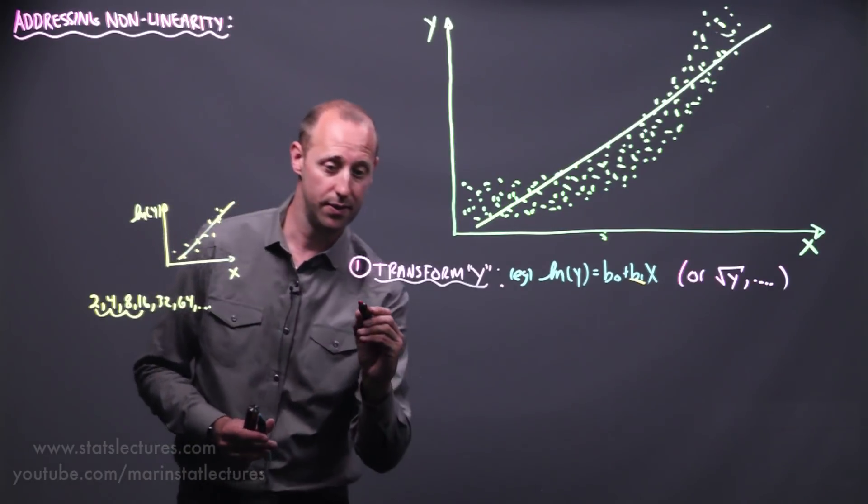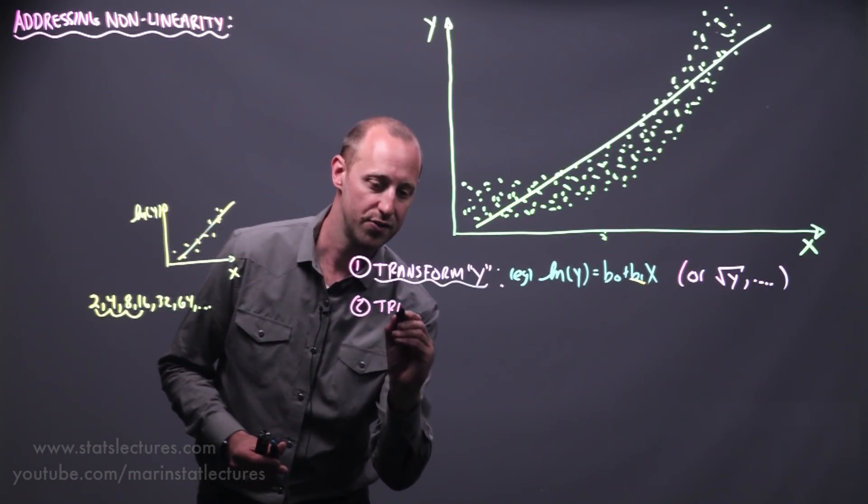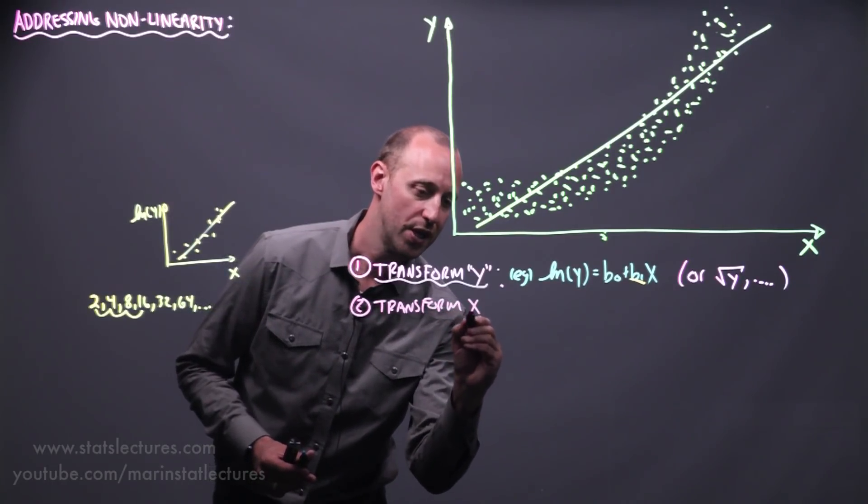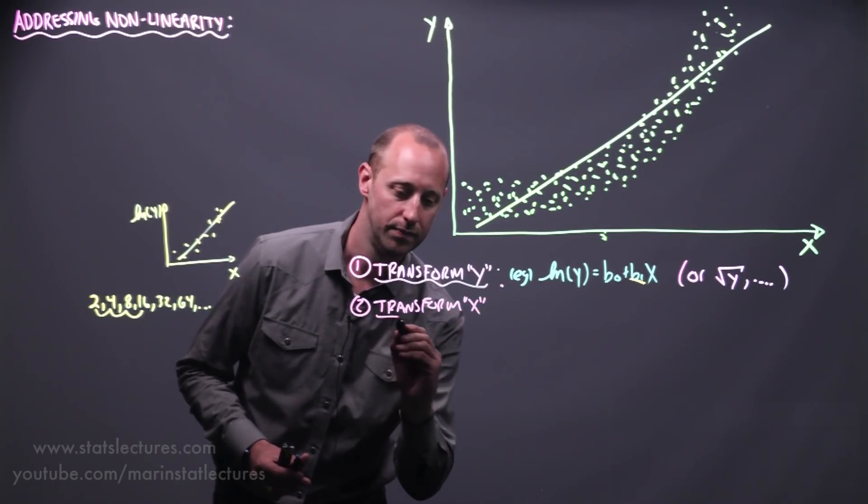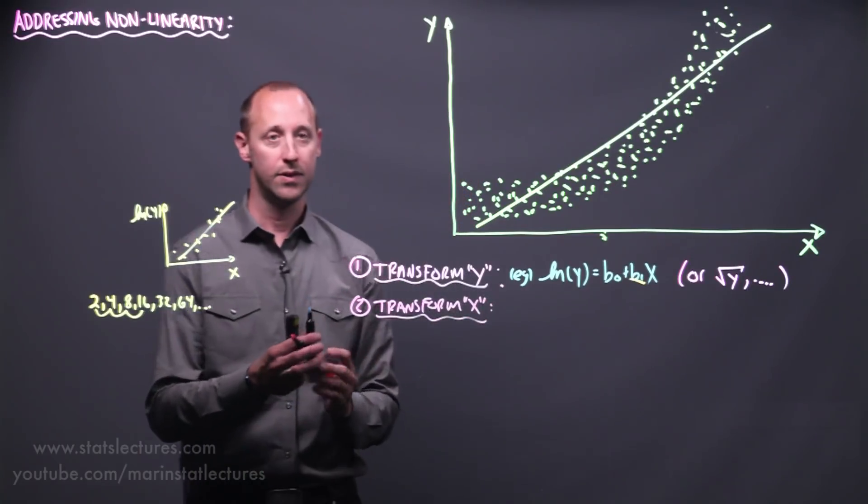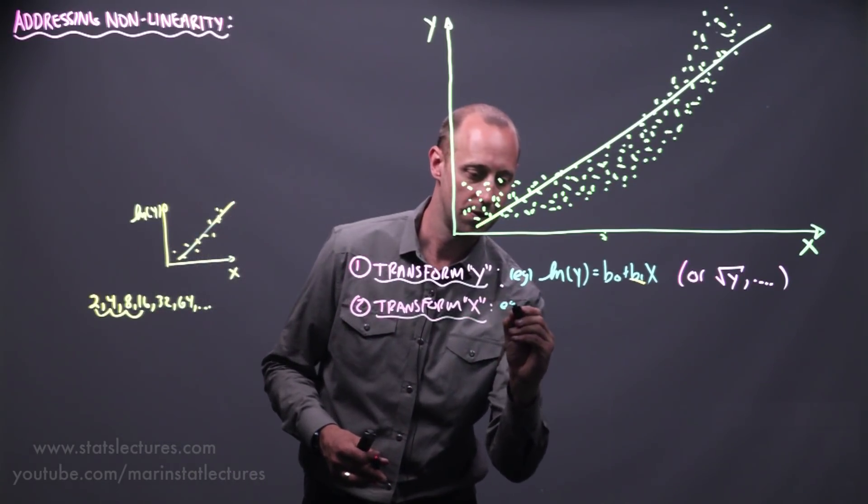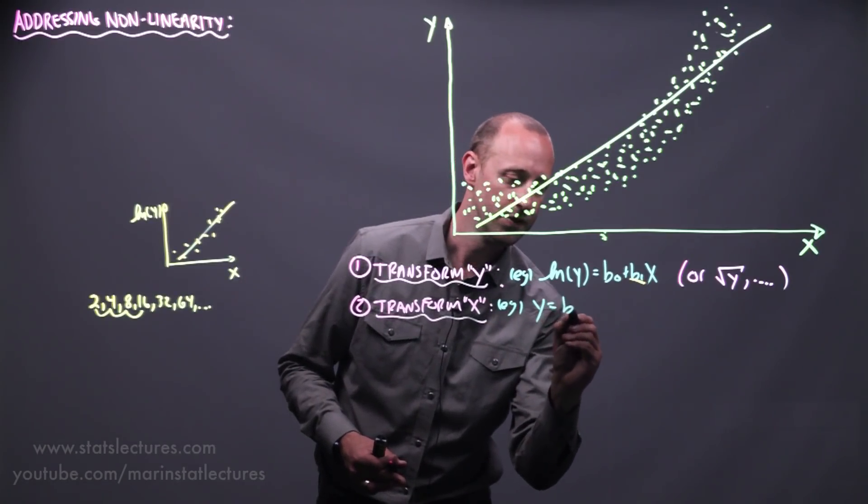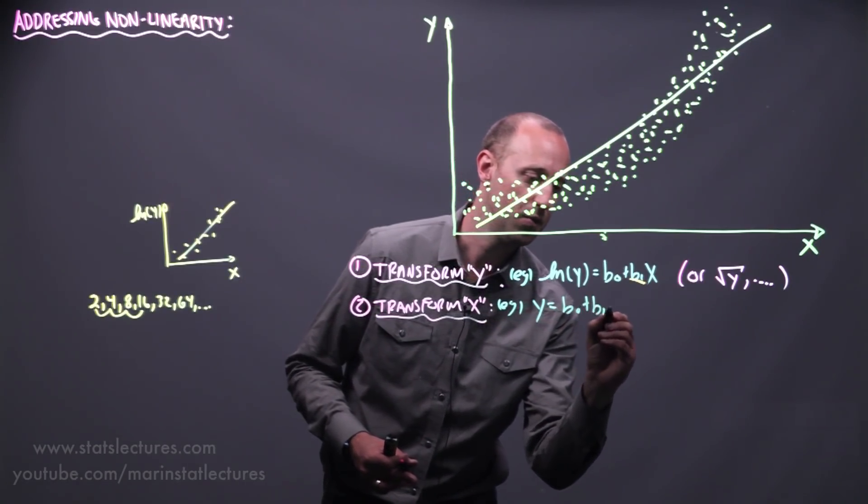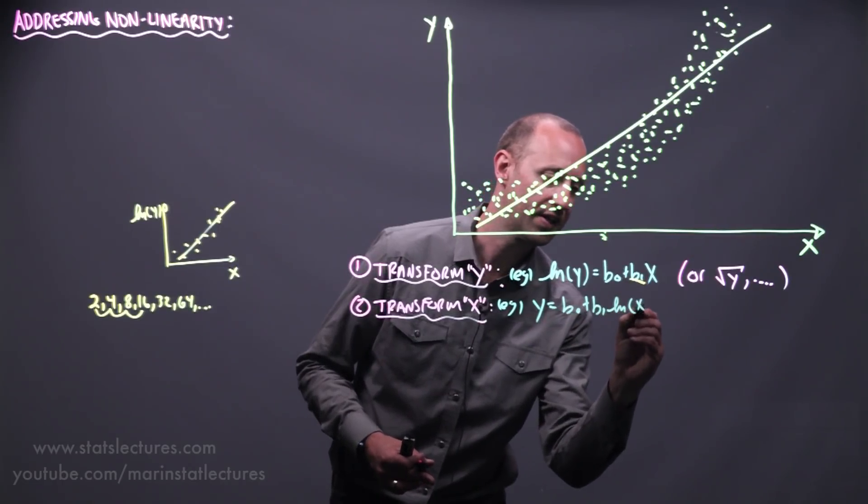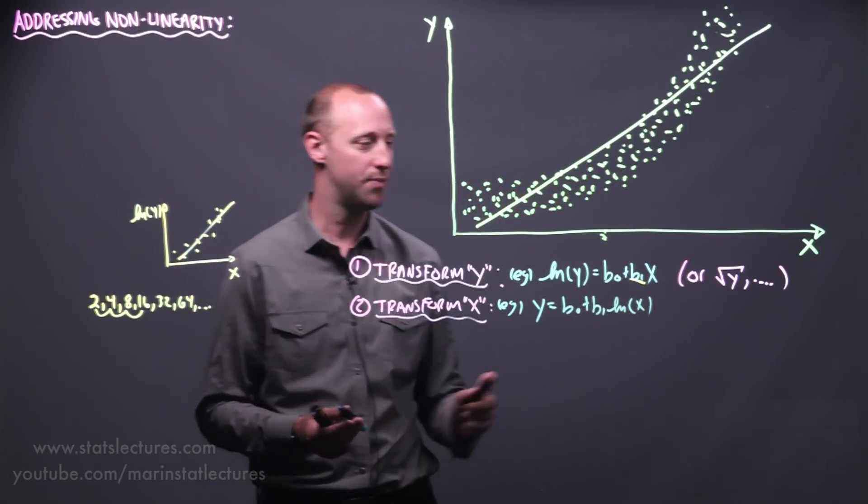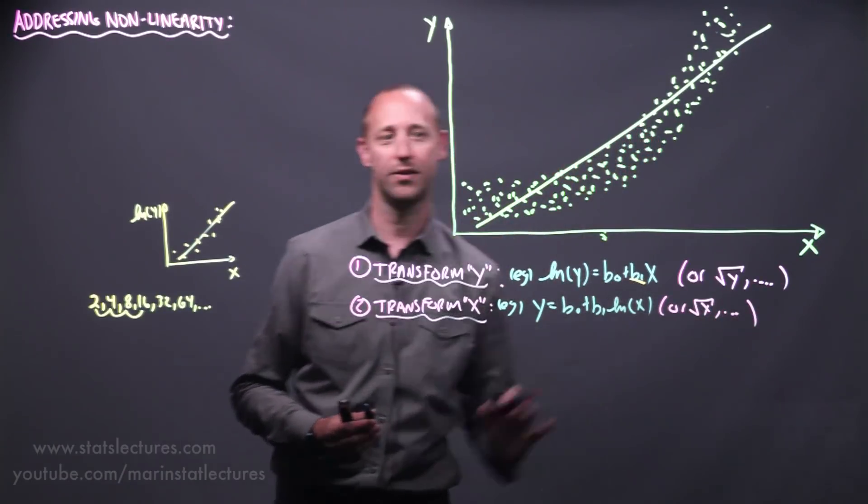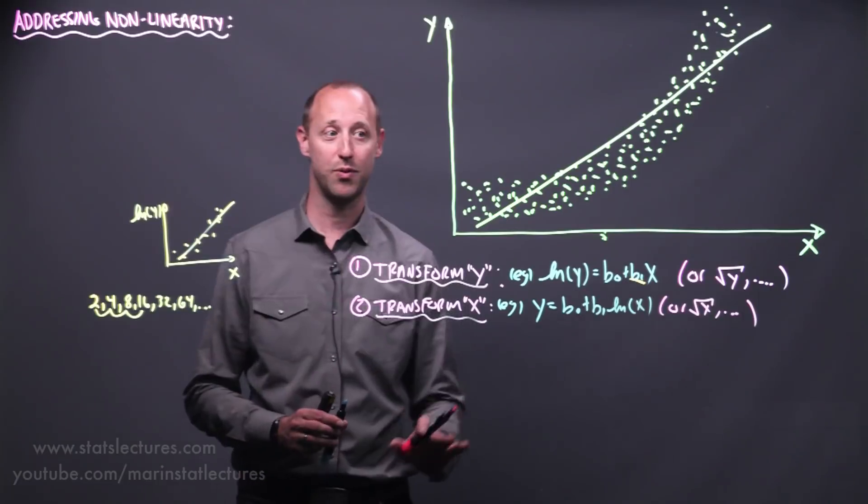A second option we can think about doing again involves transformations. We can think about transforming the x variable. So for example, we can estimate y using b0 plus b1 times the log of x. Or there's other options. You can use square root of x, x squared, or other options. So you can explore those.